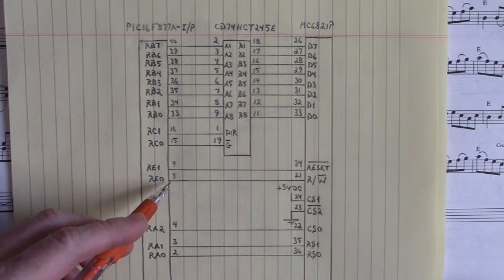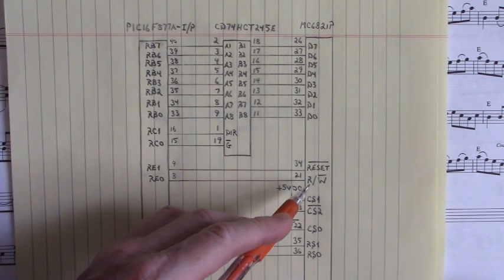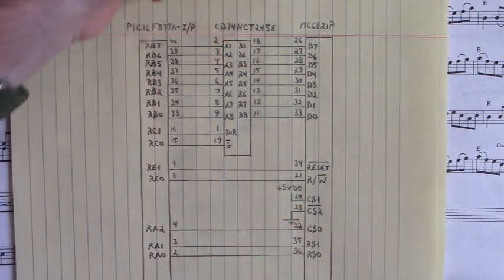Port E0, pin 8, is connected to pin 21. That is read/write bar on the MC6821P.